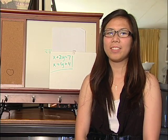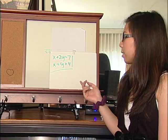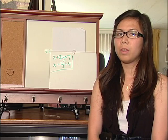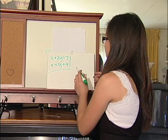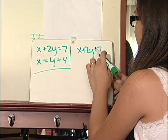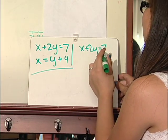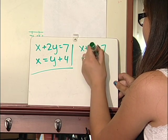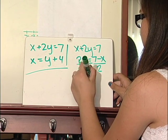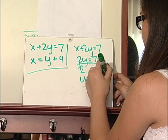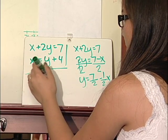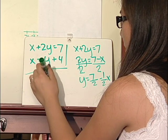The last way to solve a system of equations is by graphing. We have two equations: x plus 2y equals 7, and x equals y plus 4. The ideal way to solve this system is by putting the equations in y form. For x plus 2y equals 7: subtract x from both sides to get 2y equals 7 minus x, then divide by 2 to get y equals 7/2 minus one-half x. For the second equation, move the 4 to the other side to get y equals negative 4 plus x.